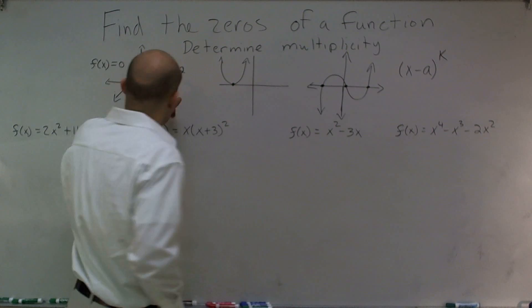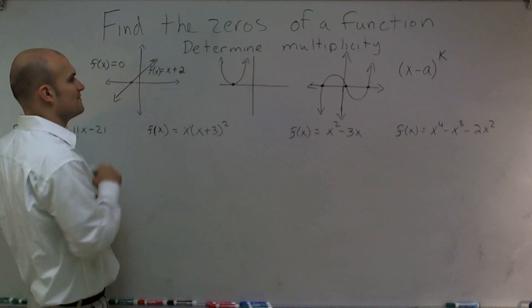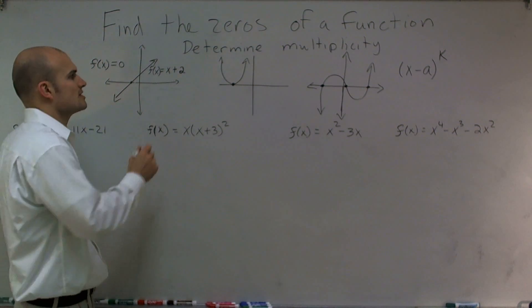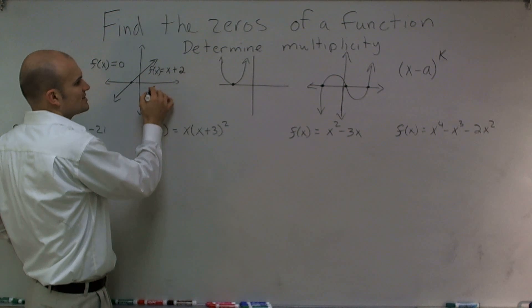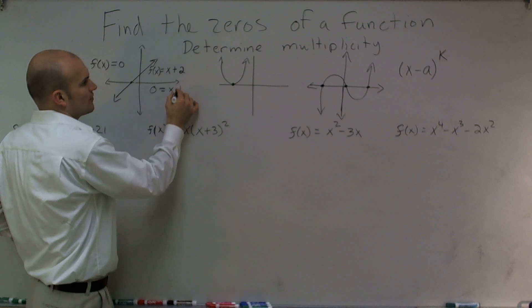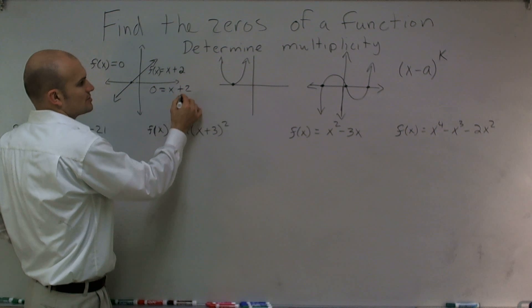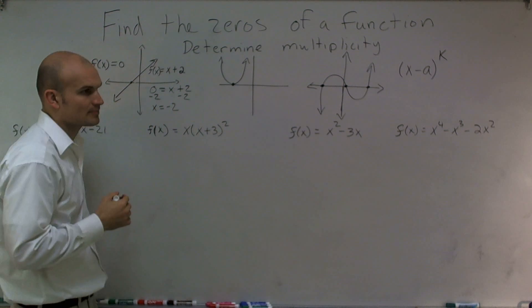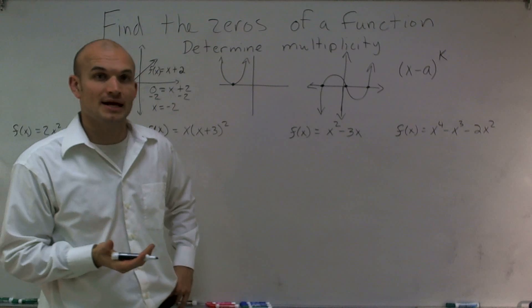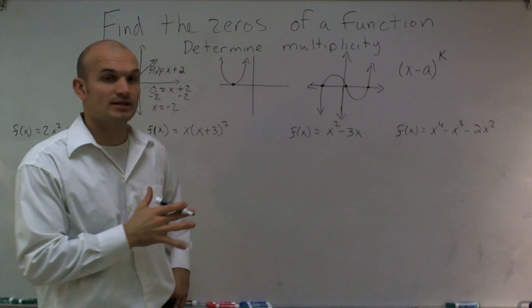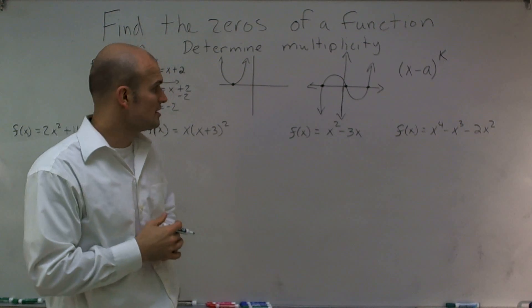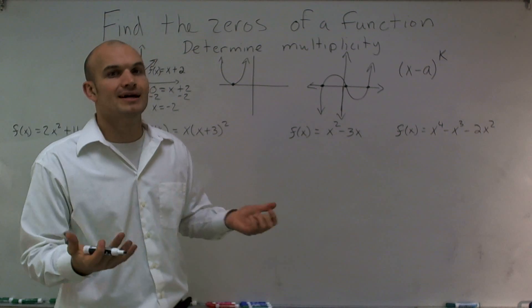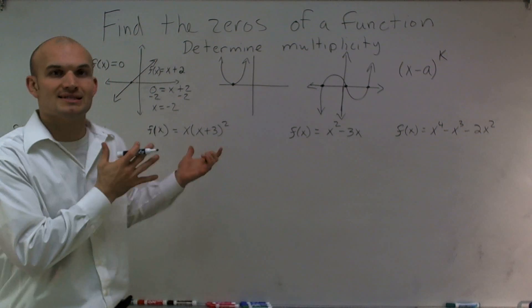So if I wanted to find, for this function f of x equals x plus 2, how do I find exactly what the zeros are? You can just plug a 0 in for f of x and then solve for x. Once I solve for x, I get x equals negative 2. It's pretty simple for a linear equation, and today the work is a little bit more difficult, but through a couple of techniques it's really going to be the exact same process.